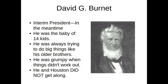We actually talked about the interim vice president when we talked about the flags — that was Lorenzo de Zabala. David G. Burnett was basically our president until we could have a real election and really vote on a president, which they did not have time to do in that situation. Burnett was probably really excited about this job because he was the baby of 14 kids, always trying to do big things like his older brothers and his dad. His dad had been a famous judge in the United States, one of his brothers wrote a really famous history book, and his other brother worked in the United States government.